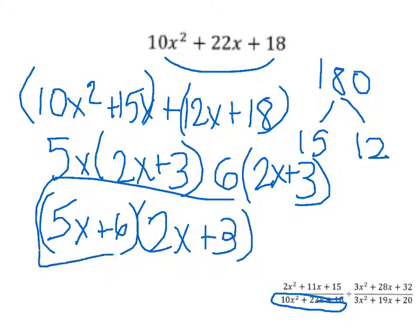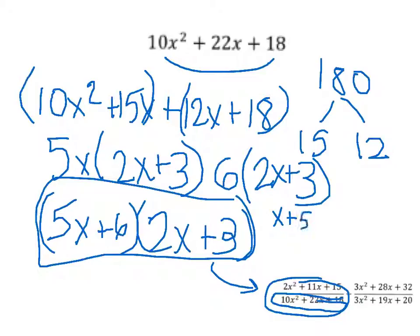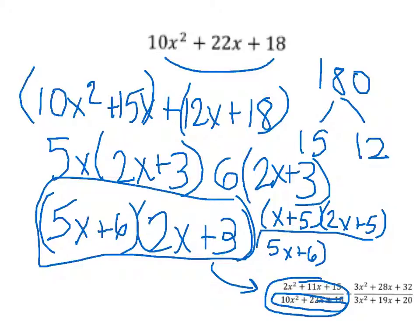This takes place of the first denominator. So far our first fraction looks like (x + 3)(2x + 5) over (5x + 6)(2x + 3). We've got the first fraction done, and now we move on to the second fraction.